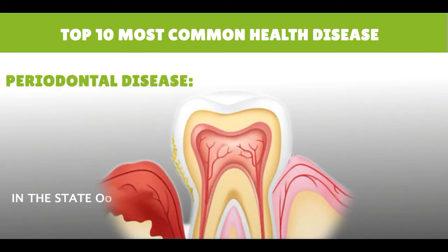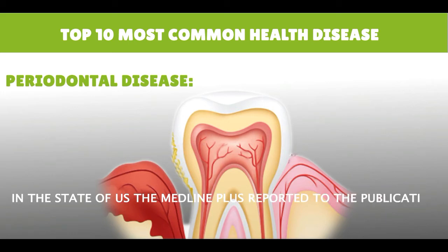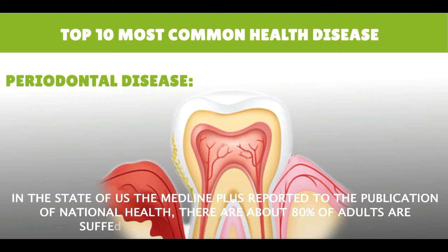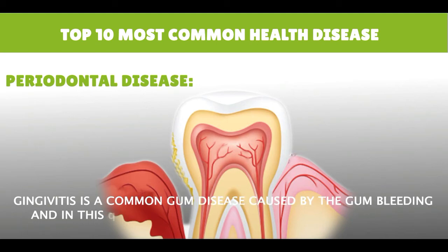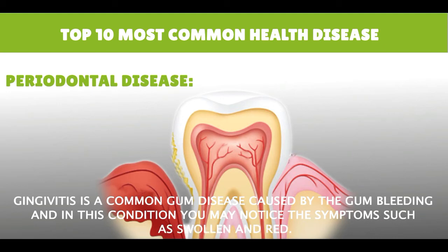Periodontal Disease. In the state of the US, MedlinePlus reported in a publication of National Health that about 80% of adults are suffering from periodontal or gum disease. Gingivitis is a common gum disease caused by gum bleeding, and in this condition you may notice symptoms such as swollen and red gums.